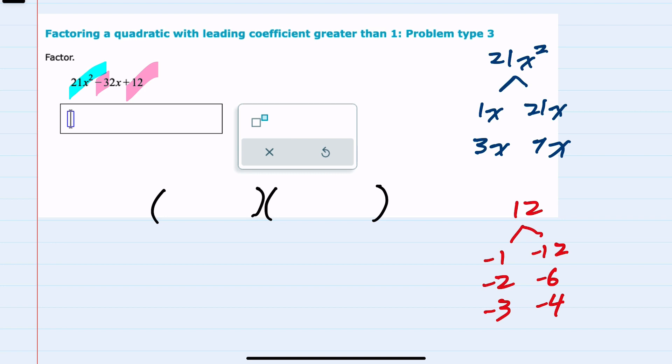So multiply to be a positive 12, but then combine to be that negative 32 in the middle. Now that I've written out all of the possibilities, I'll start by trying my 3x and 7x.